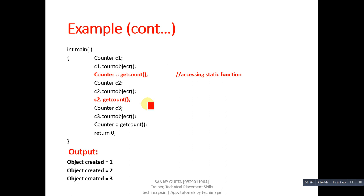You can practice this program on your compiler to verify the output. Try running the program with the static keyword on the count variable, then remove the static keyword and compare the outputs. In the case of static, you will get output 1, 2, and 3. But if you remove static from the count variable, you will get output 1, 1, 1.